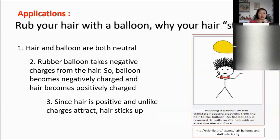Another example: rub your hair with a balloon. Initially hair and balloon are both neutral. The rubber balloon takes negative charges from the hair — so the balloon becomes negatively charged and the hair becomes positively charged. Since unlike charges attract, the hair sticks to or is attracted by the balloon.